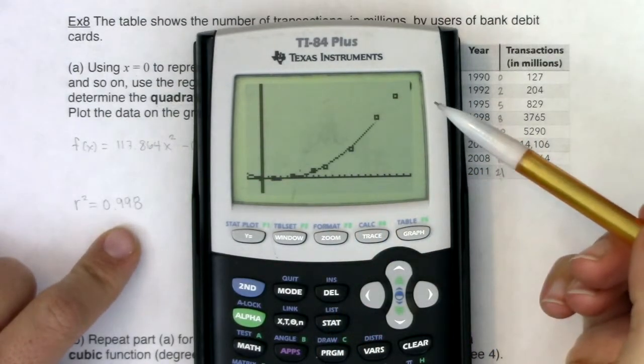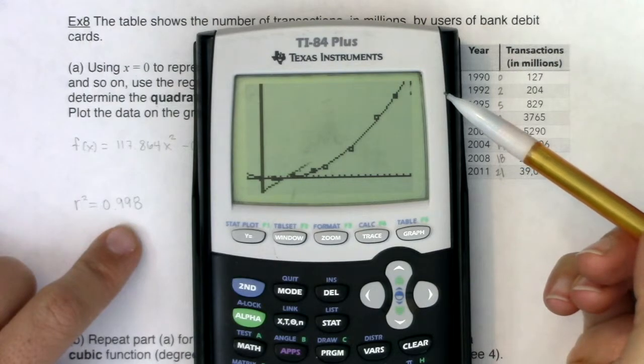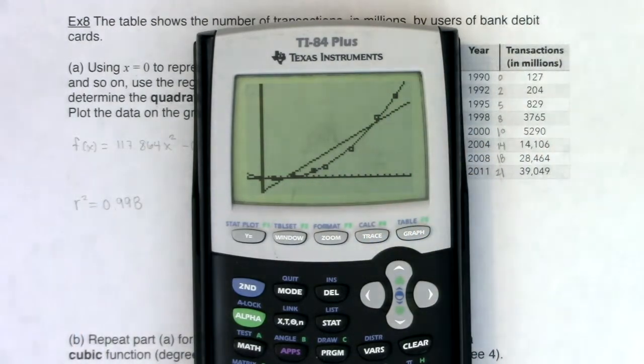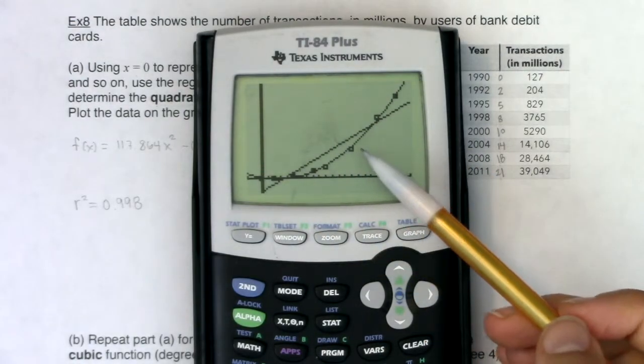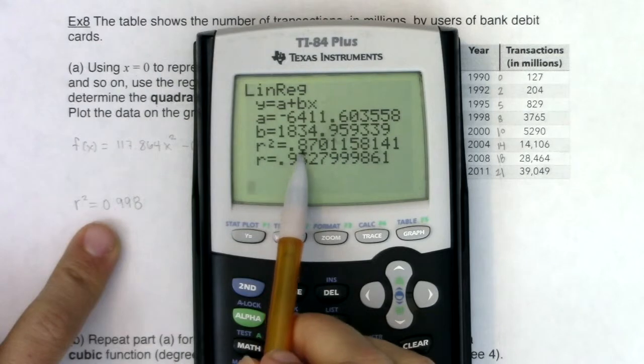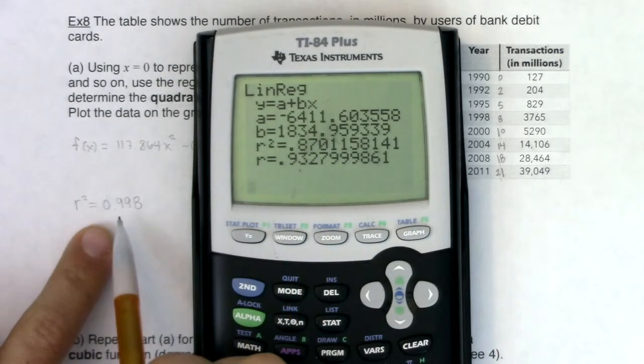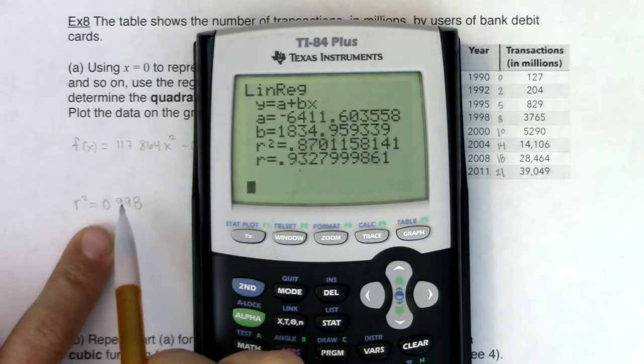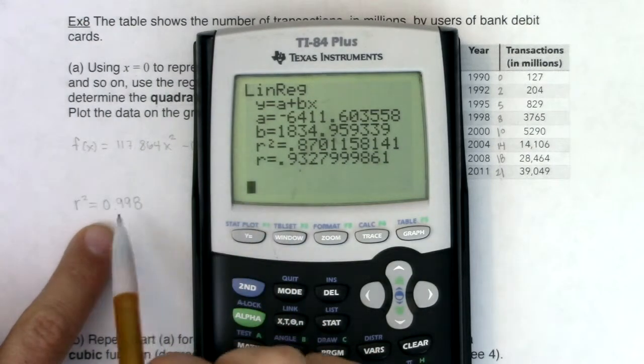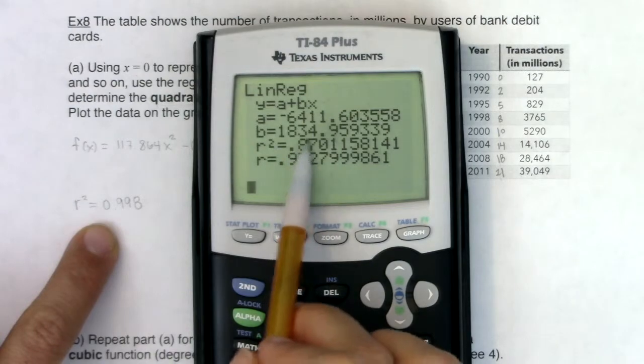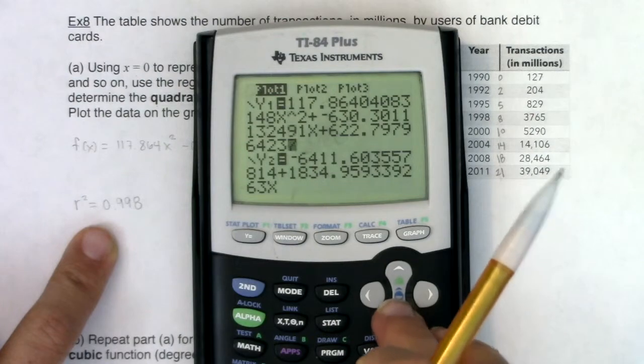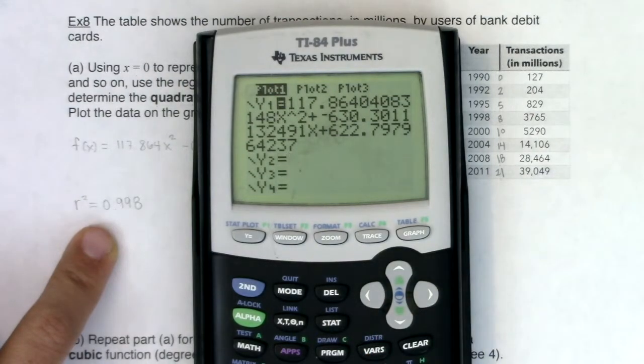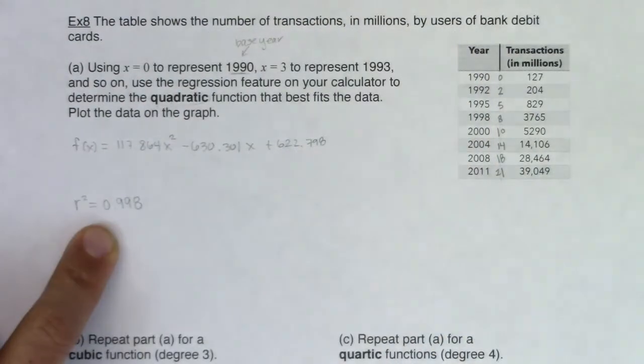If I hit zoom nine or graph, the parabola's got to come through and we'll see the line. Do you see how the line just doesn't fit as well? It misses a lot of the points. And that R squared is helping us recognize that. So let me clear out that line because that was not a good fitting model. We've got the quadratic model.